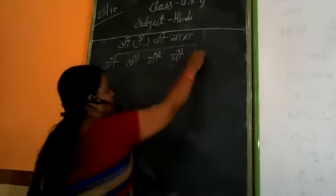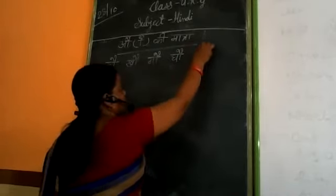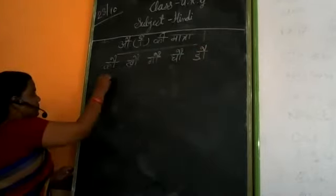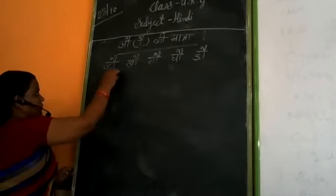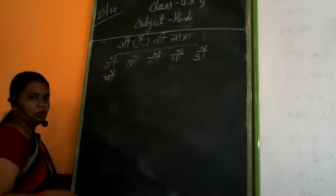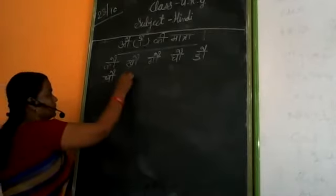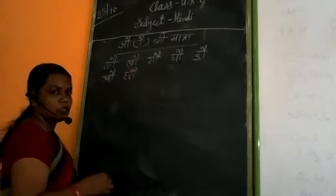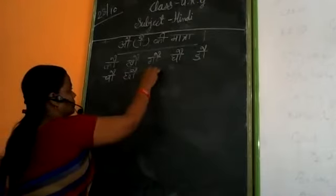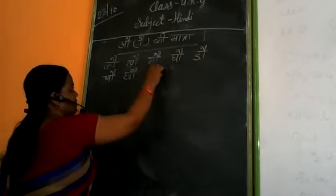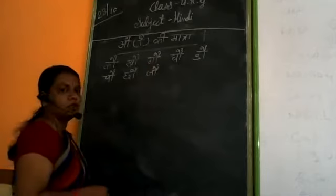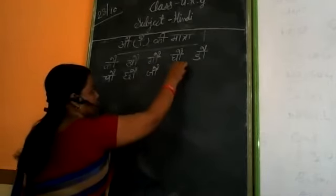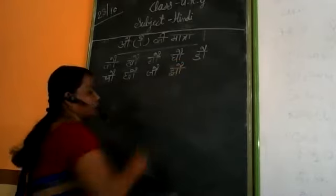Hau. Rau ki Matra Rau. Chau ki Matra Chau. Chau ki Matra Chau. Jau ki Matra Jau. Jh, au ki matra jhau.